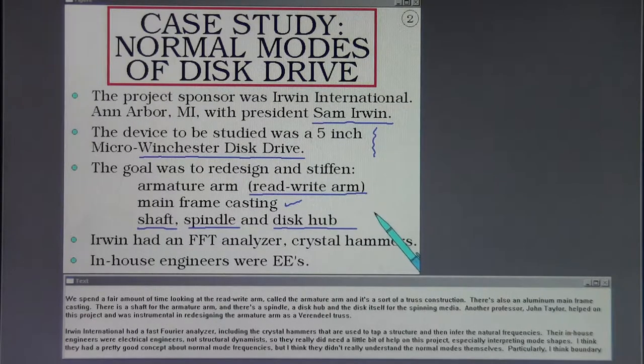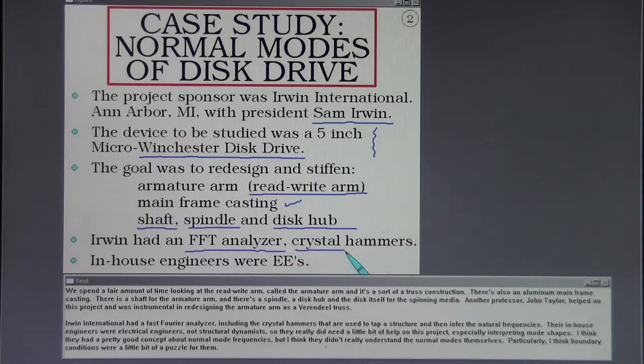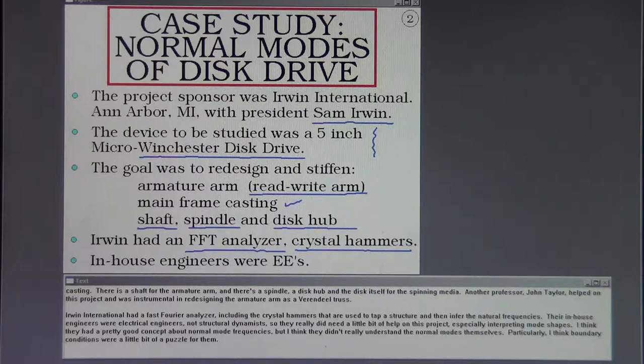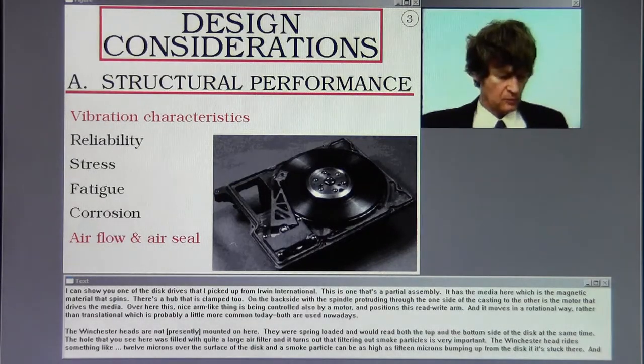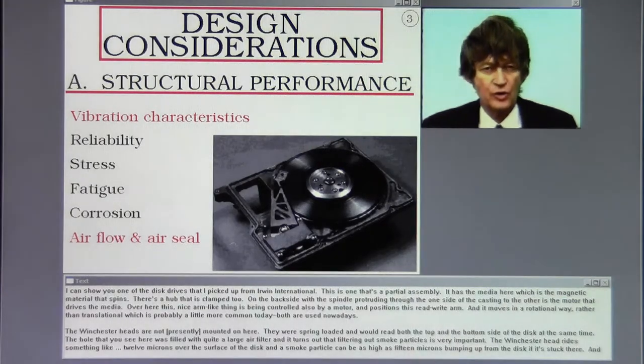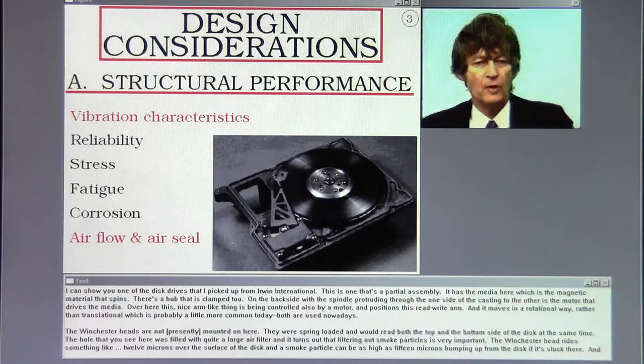Irwin International had a Fast Fourier analyzer, including the crystal hammers that are used to tap a structure and then infer the natural frequencies. Their in-house engineers were electrical engineers, not structural dynamicists. So they really did need a little bit of help on this project, especially interpreting mode shapes. I think they had a pretty good concept about normal mode frequencies, but I think they didn't really understand the normal modes themselves. Particularly, I think boundary conditions were a little bit of a puzzle for them.